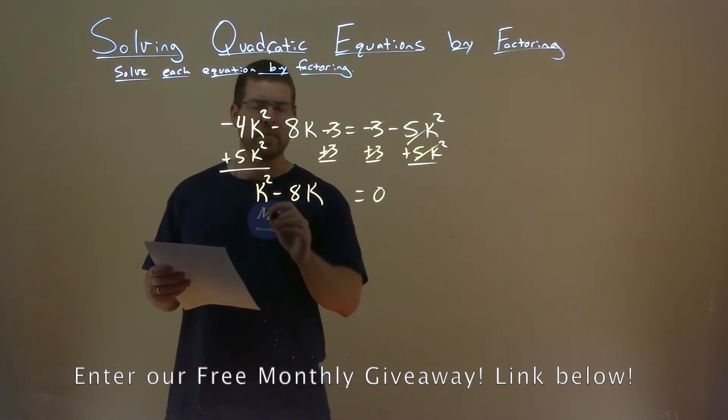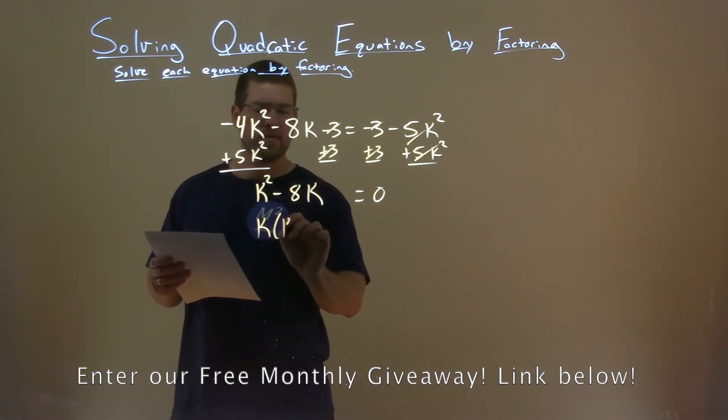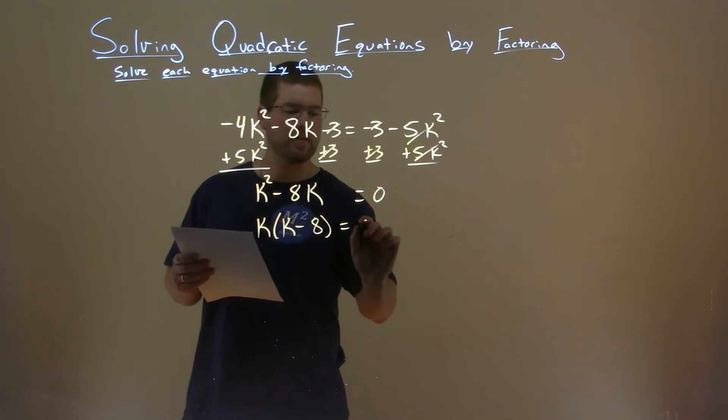So let's factor that. In a sense we're pulling out a k. So we can see that this is k times k minus 8 and that's equal to 0.